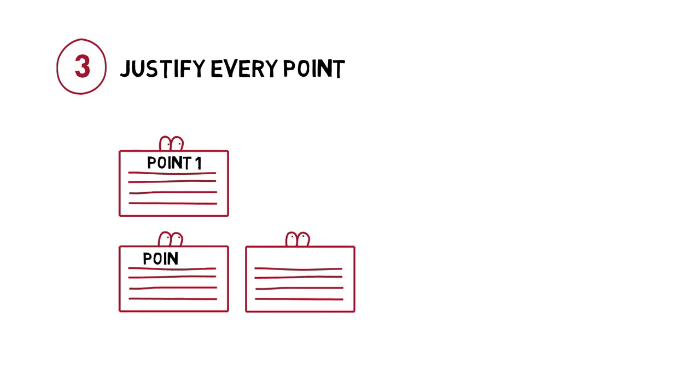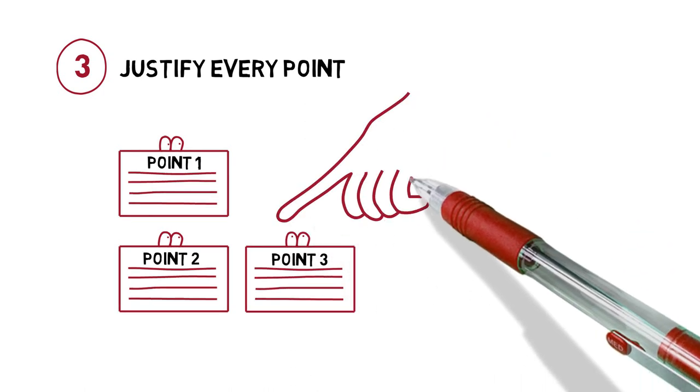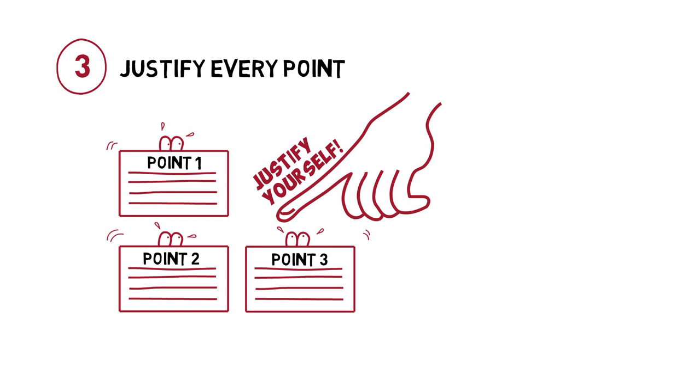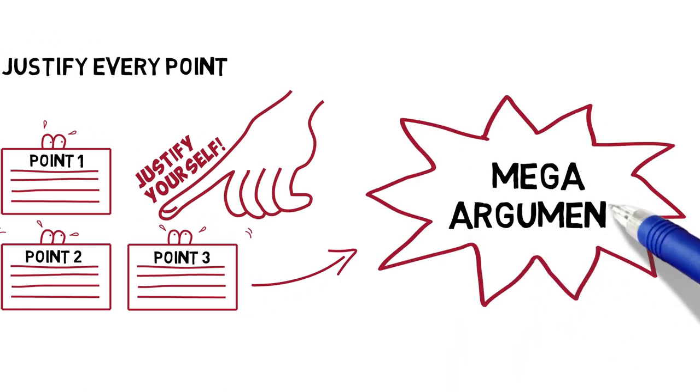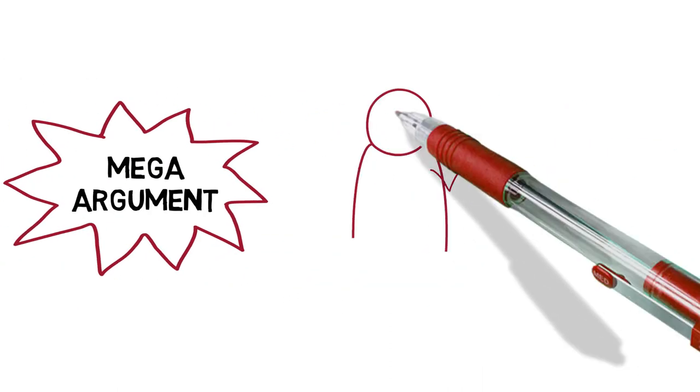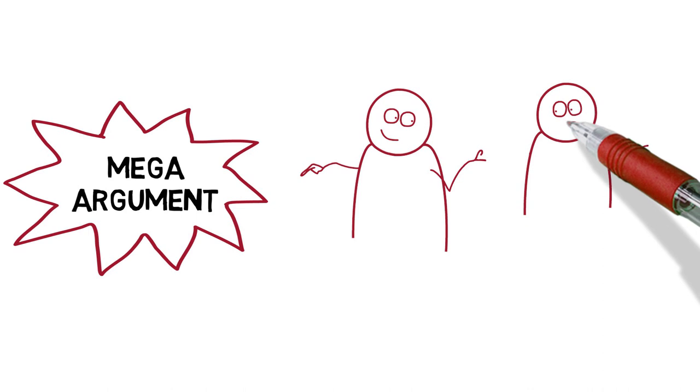As part of that argument, you need to justify the inclusion of every single point you make. Each of these points, or mini-arguments, which will be in separate paragraphs, must add up to your mega-argument. Within every paragraph, you must justify the inclusion of the point by explaining to the reader the relevance it has to your mega-argument. You must metaphorically take the reader by the hand and lead them through your reasons for thinking the point is important.